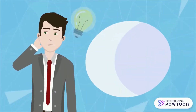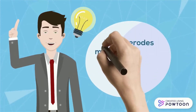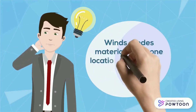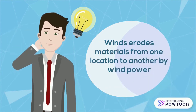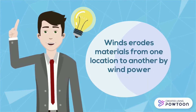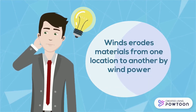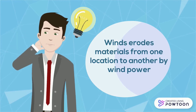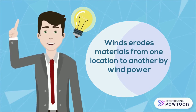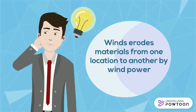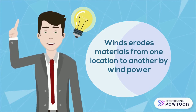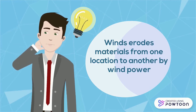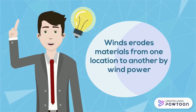The second agent is wind. Wind erodes materials from one location to another by wind power. Wind erosion can be caused by a light wind that rolls soil particles along the surface, through a strong wind that lifts a large volume of soil particles into the air to create dust storms. While wind erosion is most common in deserts and coastal sand dunes and beaches, certain land conditions will cause wind erosion in agricultural areas.